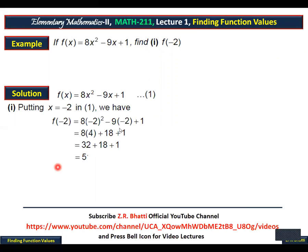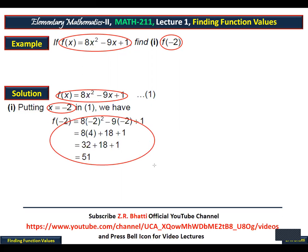So this is your answer. Let me clear the question again. The function was given as f(x) = 8x² - 9x + 1. The function value is given. You had to find f(-2). I called this equation number 1. Then I put x = -2. After putting minus 2, these are the simplification steps, and my answer is 51. Hopefully you understood this.